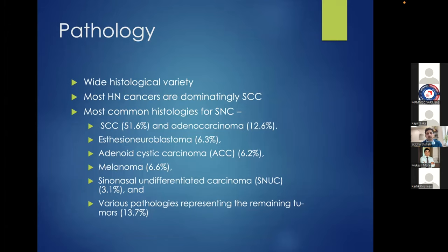Sinonasal tumors have wide histological variety: squamous cell carcinoma is just one part. You can have esthesioneuroblastomas from olfactory epithelium, adenoid cystic carcinoma from minor salivary glands, mucosal melanoma from the nasal cavity, sinonasal undifferentiated carcinoma (SNUC) from neuroectodermal tissue, and other tumors like lymphoma and sarcomas. This wide spectrum makes histology critically important.